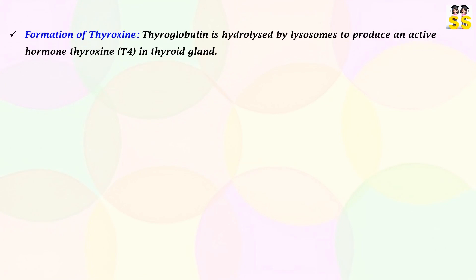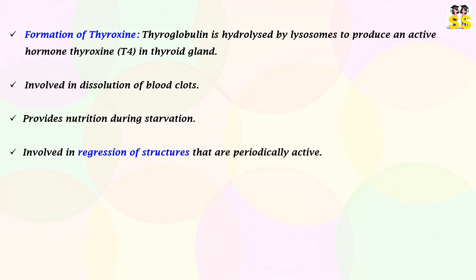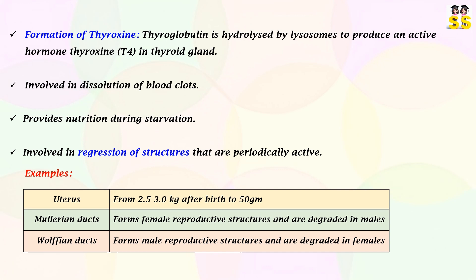Thyroglobulin is hydrolyzed by lysosomes to produce the active hormone thyroxine in the thyroid gland. Lysosomes are involved in dissolution of blood clots and provide nutrition during starvation. They are also involved in regression of structures that are periodically active — for example, the uterus shrinks from 2.5–3.0 kilograms after birth to 50 grams. Müllerian ducts form female reproductive structures but are degraded in males, while Wolffian ducts form male reproductive structures but are degraded in females.